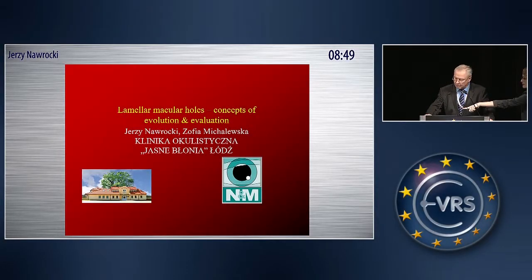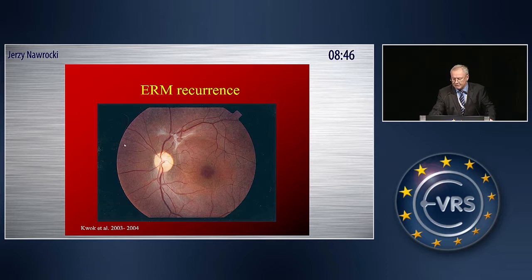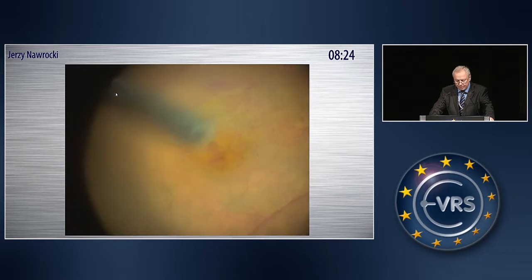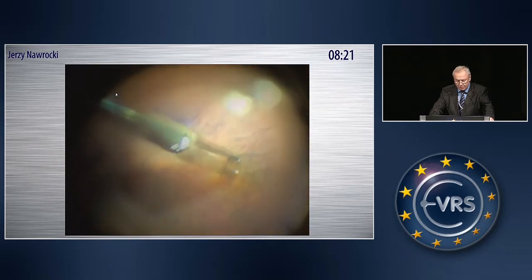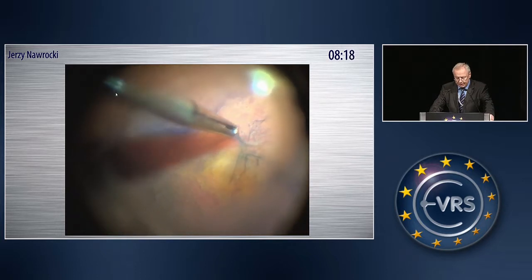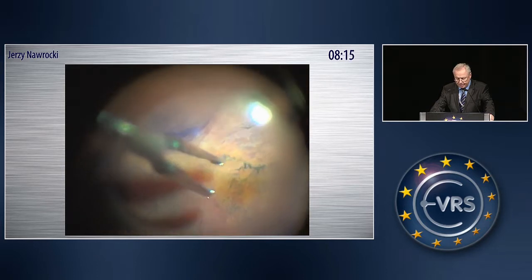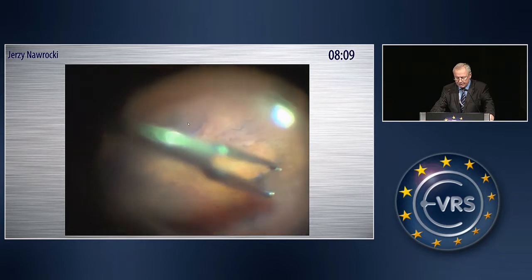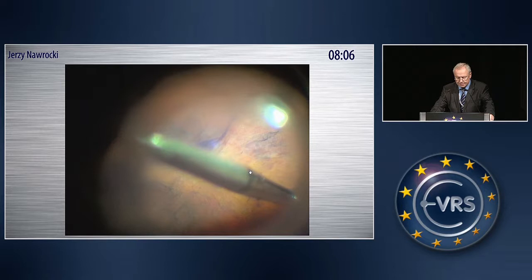As Hassan presented beautifully, I confirmed that epiretinal membrane cannot cross the boundary between ILM-peeled and ILM-unpeeled areas. This was already presented by Foog several years ago. Another example confirming this is a reproliferation of epiretinal membrane, which did not appear in this triangle piece of ILM-peeled area — everywhere else you see recurrence of epiretinal membrane.